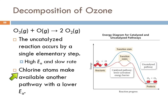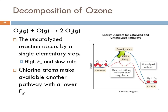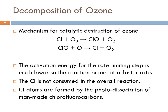Chlorine atoms serve to catalyze this reaction—they make available another pathway. The catalyzed pathway actually has two transition states, but both of them have lower activation energies than the original uncatalyzed reaction. So when there are chlorine atoms present in the atmosphere, the ozone reacts more quickly to form oxygen. Do you know where the chlorine atoms in the atmosphere come from? Chlorofluorocarbons. The decomposition of chlorofluorocarbons puts chlorine atoms into the atmosphere, and that catalyzes this reaction—which is one of the big concerns for restricting CFC use.